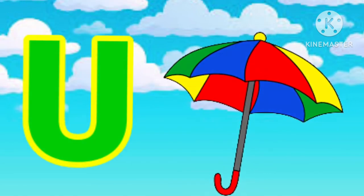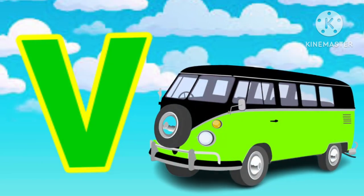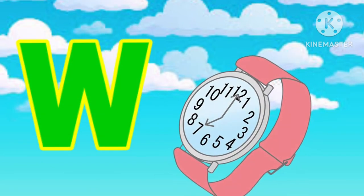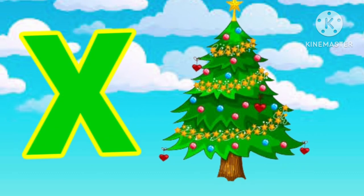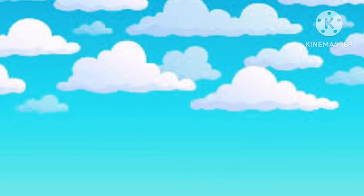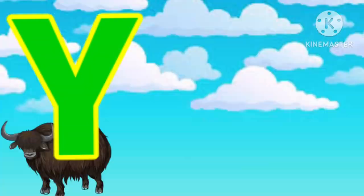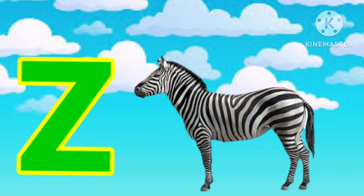U for umbrella, B for lamp, W for watch, X for atmosphere, Y for yak, Z for zebra.